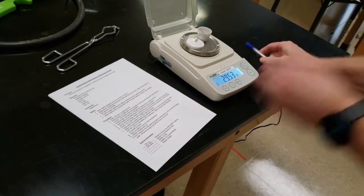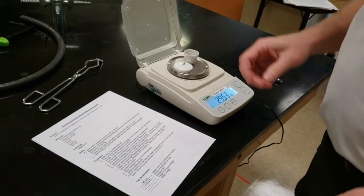Now put it on the scale along with the crucible and the lid and write down the mass.